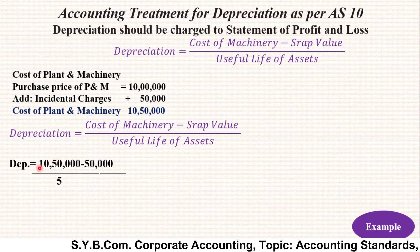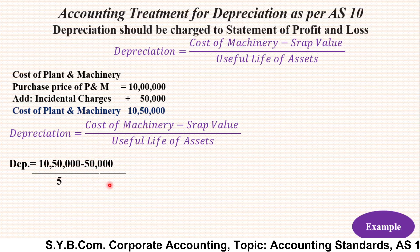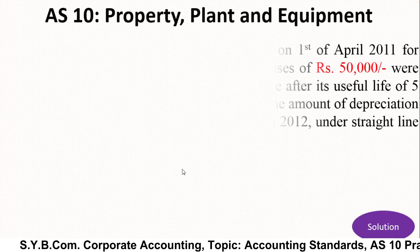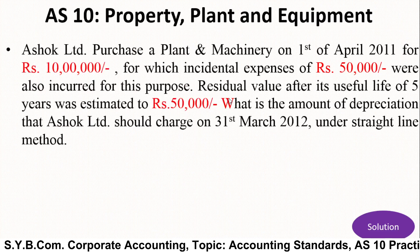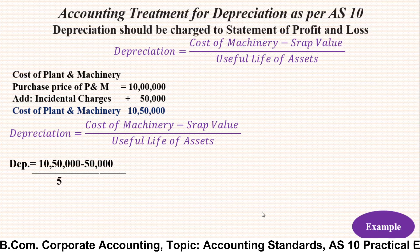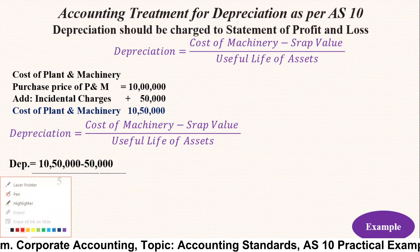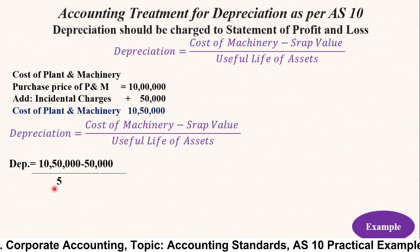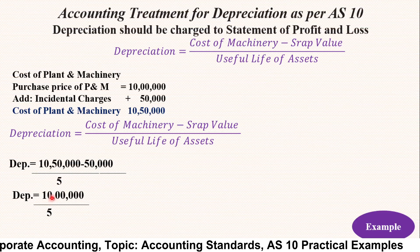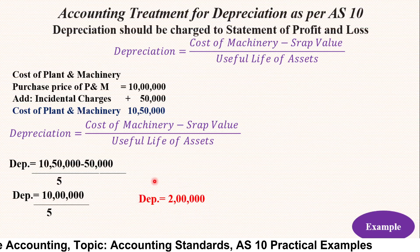So depreciation equals rupees 10,50,000 — that is the cost of asset — minus the scrap value, which is given as rupees 50,000. The residual value after five years is rupees 50,000, so 50,000 is deducted from the cost. Then divide by the useful life, estimated at five years. That gives us 10,50,000 minus 50,000 = 10,00,000 divided by 5, which equals rupees 2 lakh as depreciation.